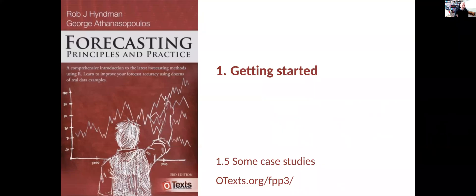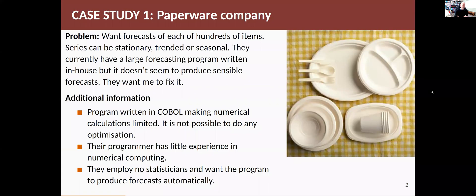To give you an idea of some of the types of forecasting problems that arise, I'm going to talk about four case studies from my own consulting practice, things that I've helped companies solve over the years. The first one is one of my oldest — one of my earliest consulting projects. A paperware company came to me wanting forecasts for hundreds of items. This company manufactured things like paper plates and serviettes, the wrappers for McDonald's burgers, anything that was disposable, made out of paper and used in tableware.